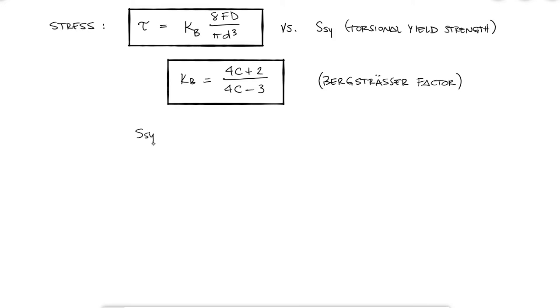The torsional yield strength will be a function of the ultimate tensile strength, which in turn is a function of wire diameter and material, but again, more on that later.